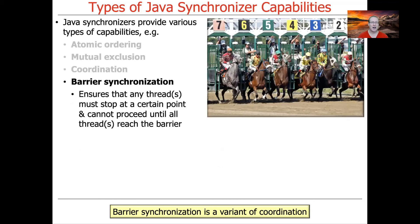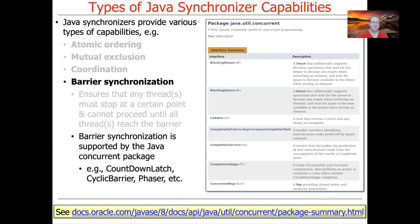The fourth and final type of synchronization mechanism is barrier synchronization, which ensures groups of threads stop at a certain point and then start up as a group — waiting until everybody gets where they need to be before they all start together, which is called gang scheduling. Barrier synchronization can be thought of as a variant of coordination that works on groups of threads rather than pairs. It is supported in Java by the java.util.concurrent package in the form of CountDownLatch, CyclicBarrier, and Phaser, and you'll get a chance to use CountDownLatches and CyclicBarriers later in the course.